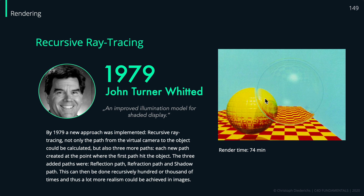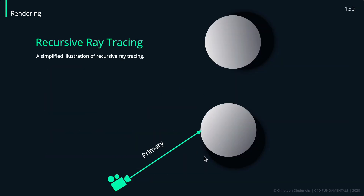With this new approach, we can now check if an object is made of glass and is refractive, render shadows, and render reflections — for example, a checkerboard pattern reflecting on a sphere. To understand this further: in addition to the primary ray from the camera, we shoot a second ray from the hit point to check for reflections.